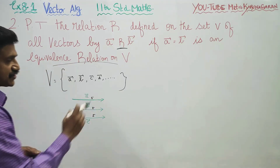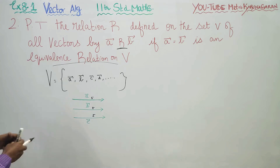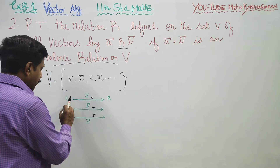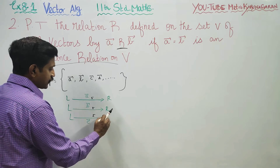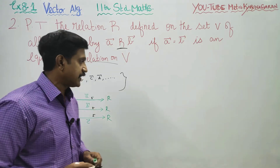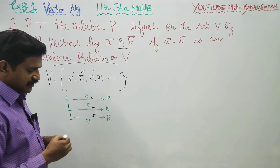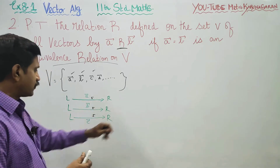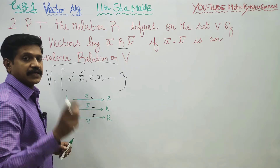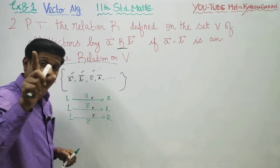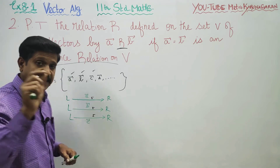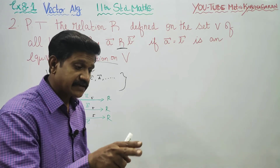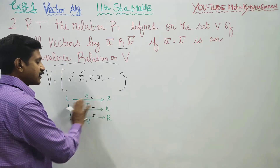Next, equal direction. Equal direction means the vector moves from left to right. I have taken three vectors, all traveling from left to right with a measurement of 5. If vectors have equal length and the same direction, then they are called equal vectors — vectors having the same magnitude and direction.